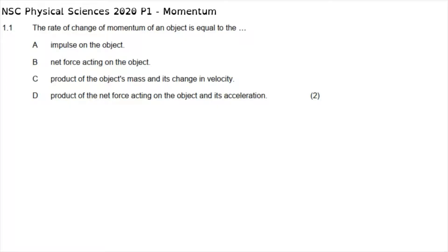Question 1.1 of multiple choice reads: the rate of change of momentum of an object is equal to... The rate of change of momentum deals with the impulse formula, which can be written as F-net times the change in time is equal to the change in momentum.